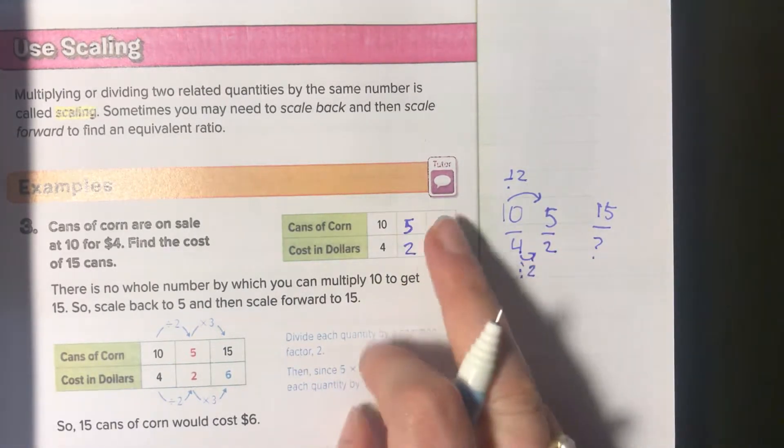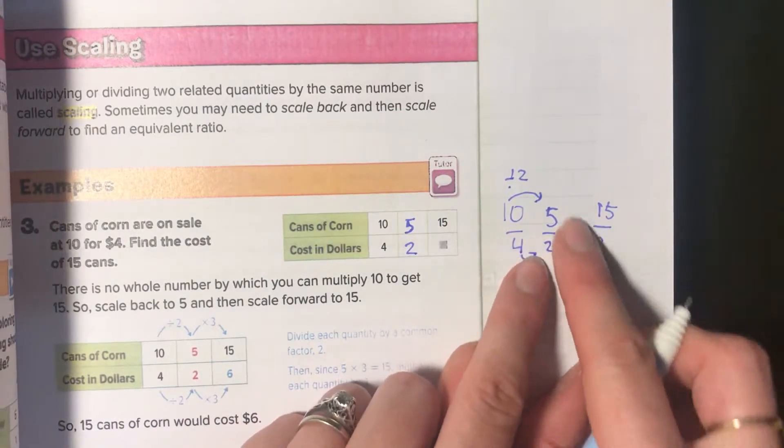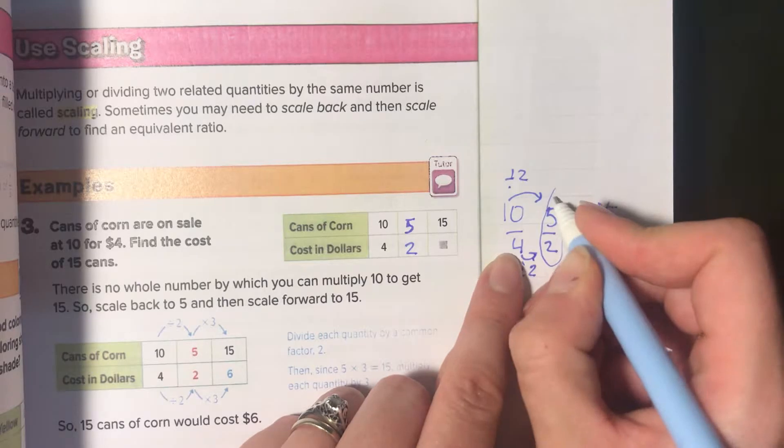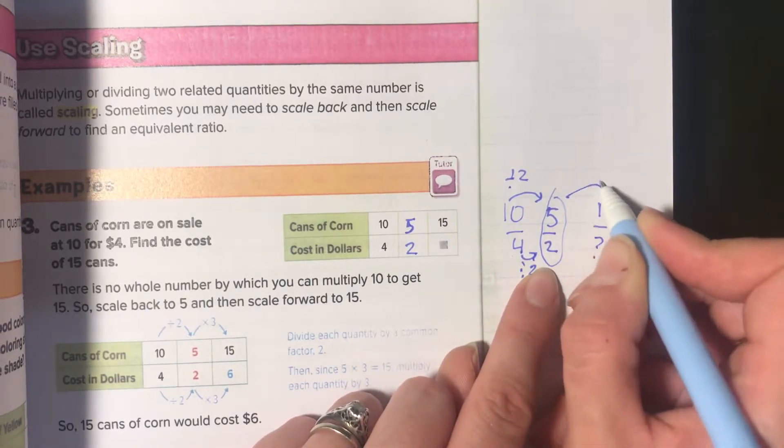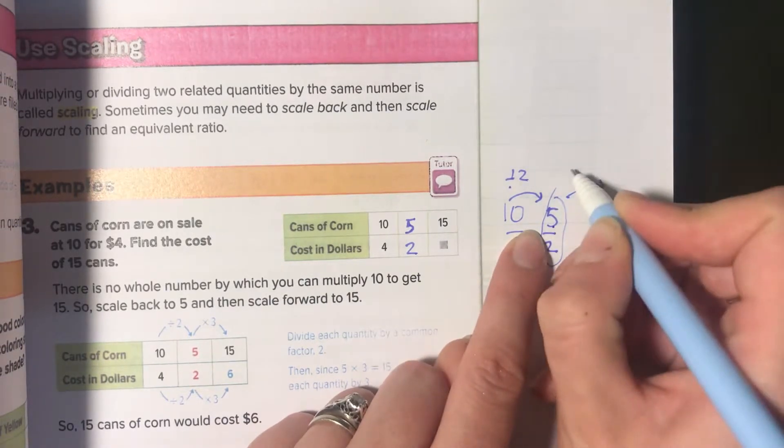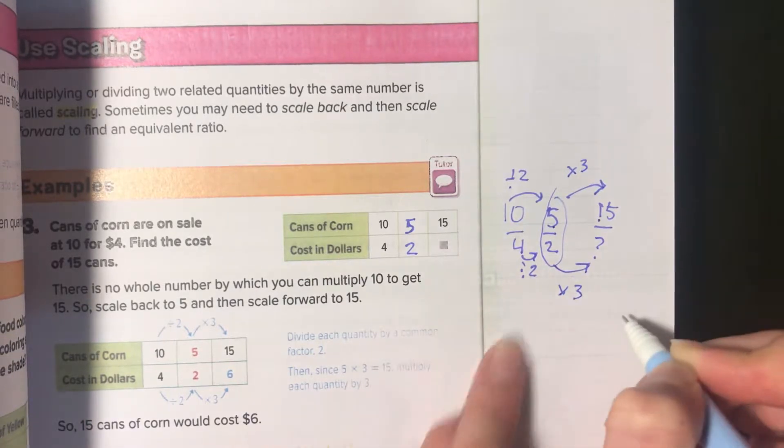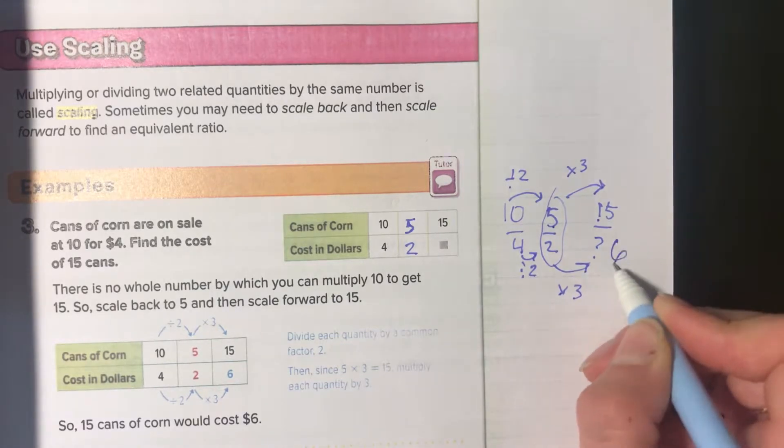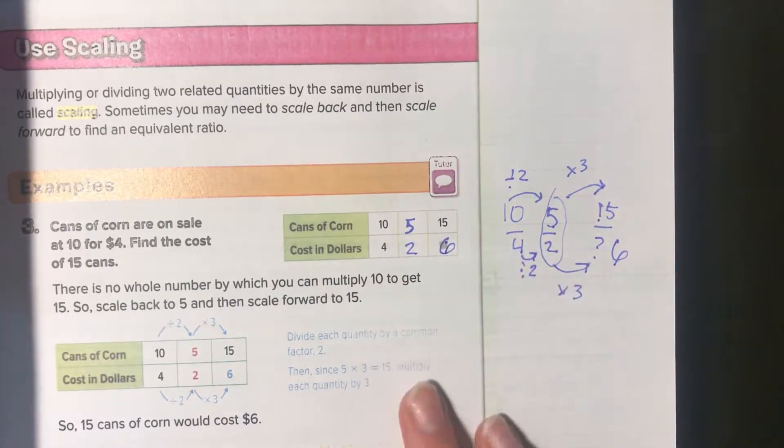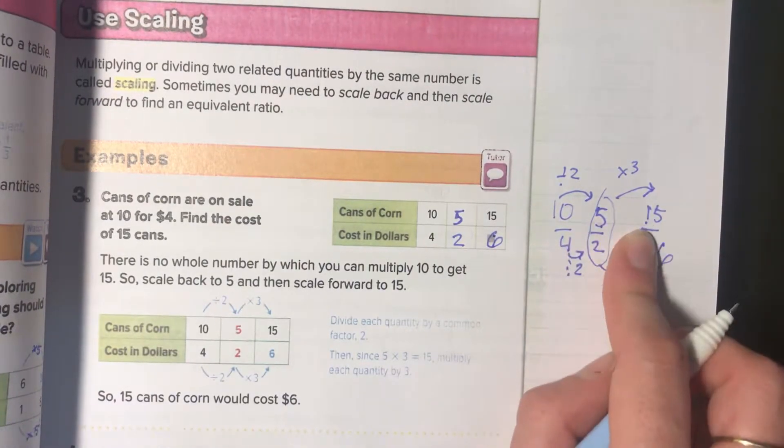Now, because fifteen and five work well together, you can use this one, the smaller ratio that you scaled to, to get back here. So now you can use that to get to fifteen. Times three. Do the same, top and bottom, so times three, which gives you six. So in this box it would be six. So fifteen cans of corn would cost six dollars. That was scaling. You had to go down and then back up again.